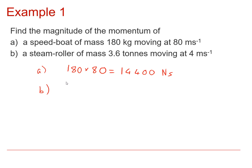And then part B with this steamroller, so 3.6 tonnes, so that's 3,600 kilograms multiplied by a much slower speed of 4 metres per second. And interestingly enough, that turns out to be the same size.